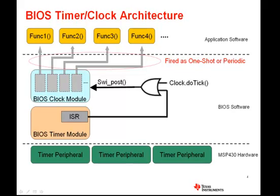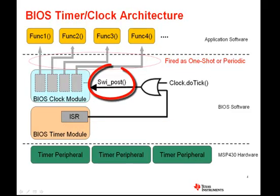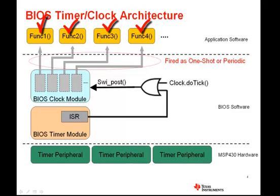The clock module can either take as an input some external periodic event in the system that calls the Clock_doTick API, or more commonly is configured to use a periodic heartbeat from the SysBIOS timer module. The clock module creates a software interrupt which gets posted by one of these inputs and provides a way in which any number of different functions can be configured to fire off, either as one-shots or periodically. In this way, SysBIOS makes it appear to the application that it has an almost unlimited number of timers at its disposal.